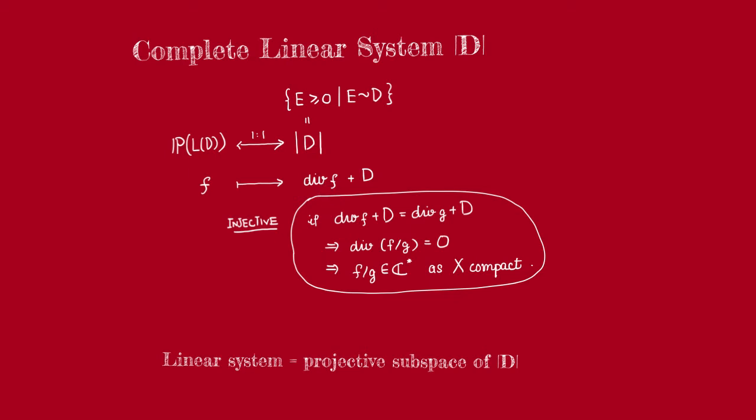Two such functions, f and g, will map to the same thing if and only if div(f/g) is 0. That means f/g is some meromorphic function with no poles or zeros. But that must mean f/g must be constant because X is compact. So f is uniquely defined up to multiplication by a constant, so it's a well-defined element of the projectivization of L(D).